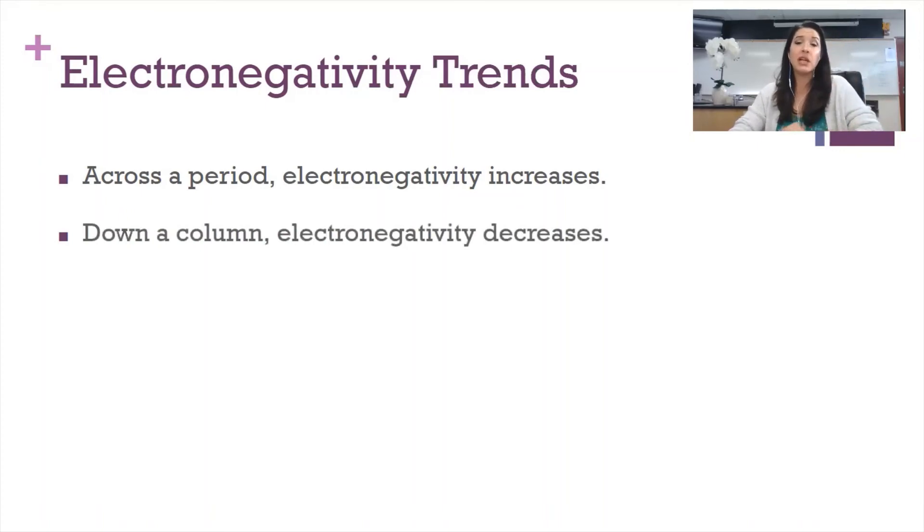As you move down a column, electronegativity decreases. And if you think about what's happening there, you've got larger and larger nuclei. Yes, so more attractive to electrons. However, those outermost valence electrons are quite shielded by the electrons that are happening closer to the nucleus there. So as you move down a column, electronegativity, in general, decreases.